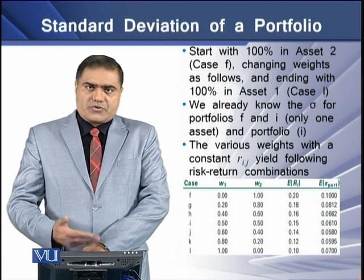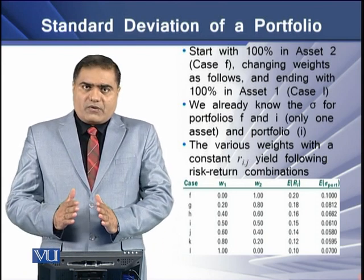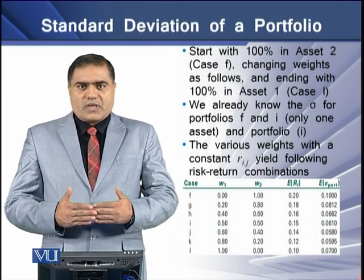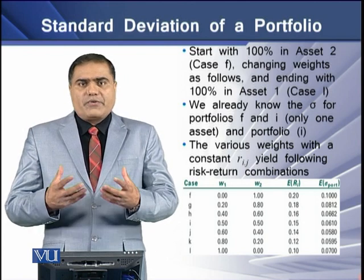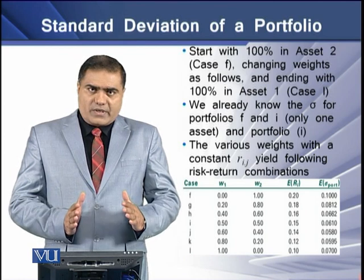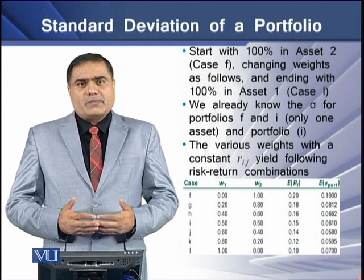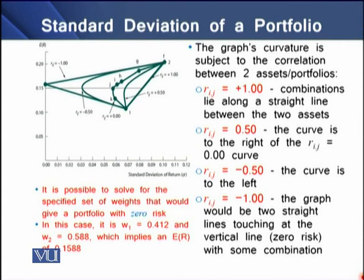These values can be seen on screen. We have seven combinations from case F through L — F, G, H, I, J, K, and L — with weight one for one asset and weight two for the other. For each portfolio combination, we derive the expected return and expected riskiness. Using these combinations, we have derived the diagram showing the graph's curvature.